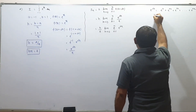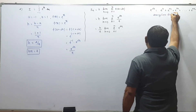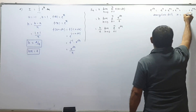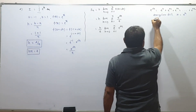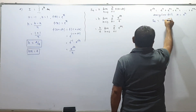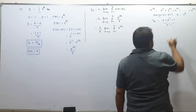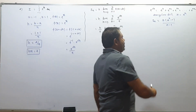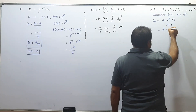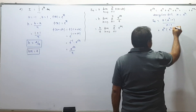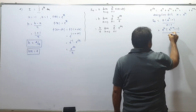This is a geometric series with first term a = e^h and common ratio r = e^h. Using the geometric series formula: S = a(rⁿ - 1)/(r - 1) = e^h · (e^(nh) - 1) / (e^h - 1).